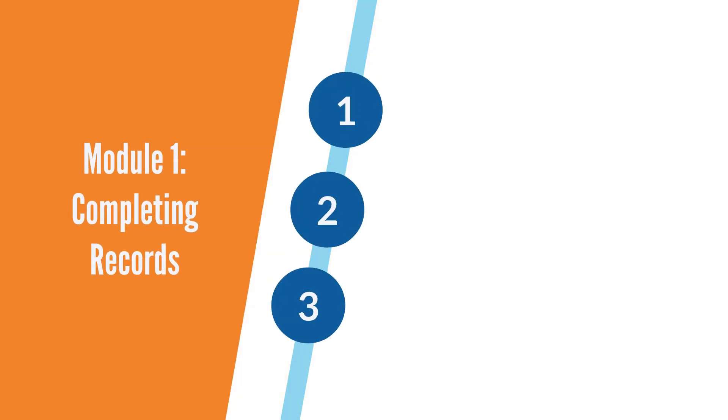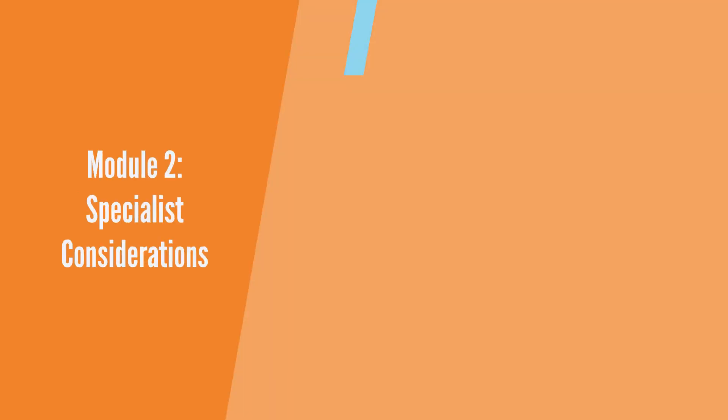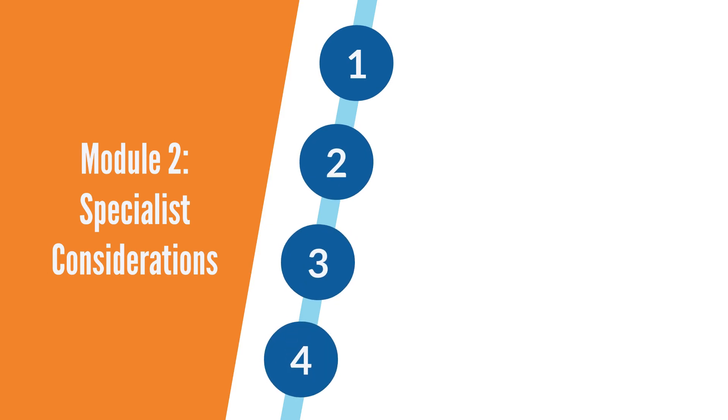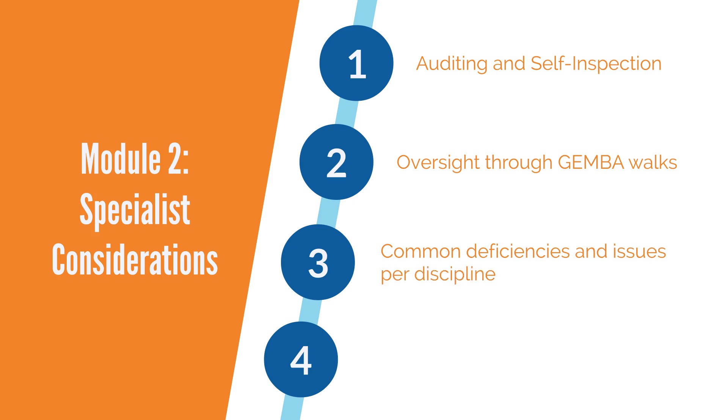In Module 1, we'll look at the completion of records. We'll look at the terms and definitions that everyone needs to know, and we'll look at what it takes to complete the record, to review and approve it. In Module 2, we'll look at some specialist considerations, auditing and self-inspection, as well as local management oversight through Gemba Walks. We'll look at the common deficiencies and the different types of issues by discipline. And finally, we'll look at technical controls, what's required for computerised systems.